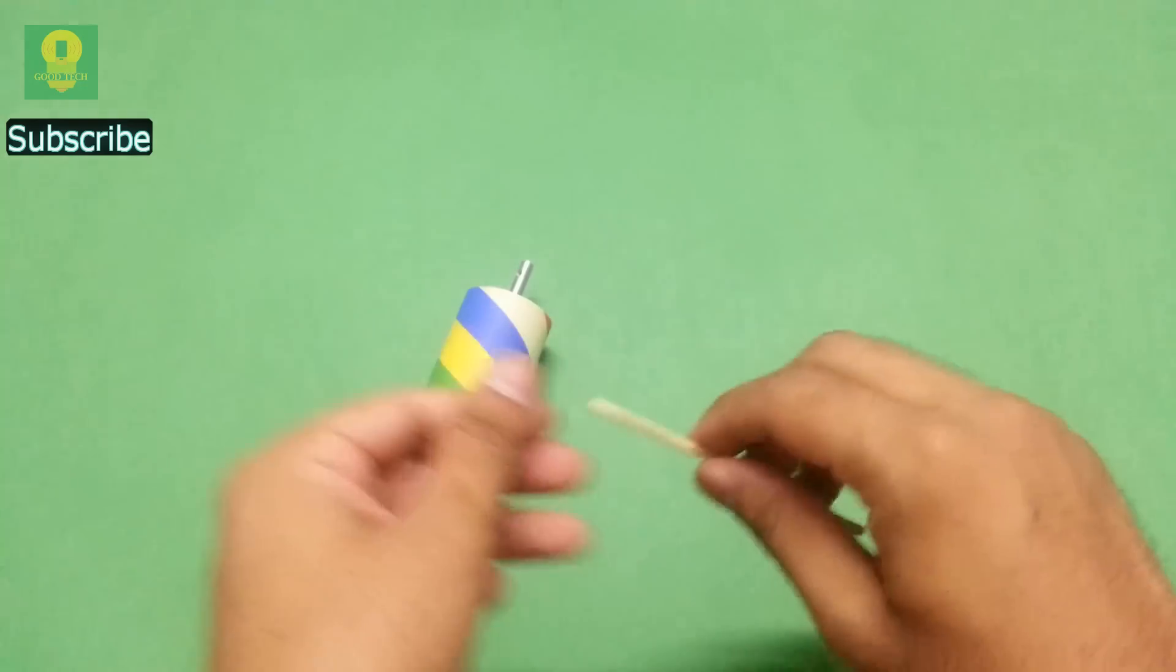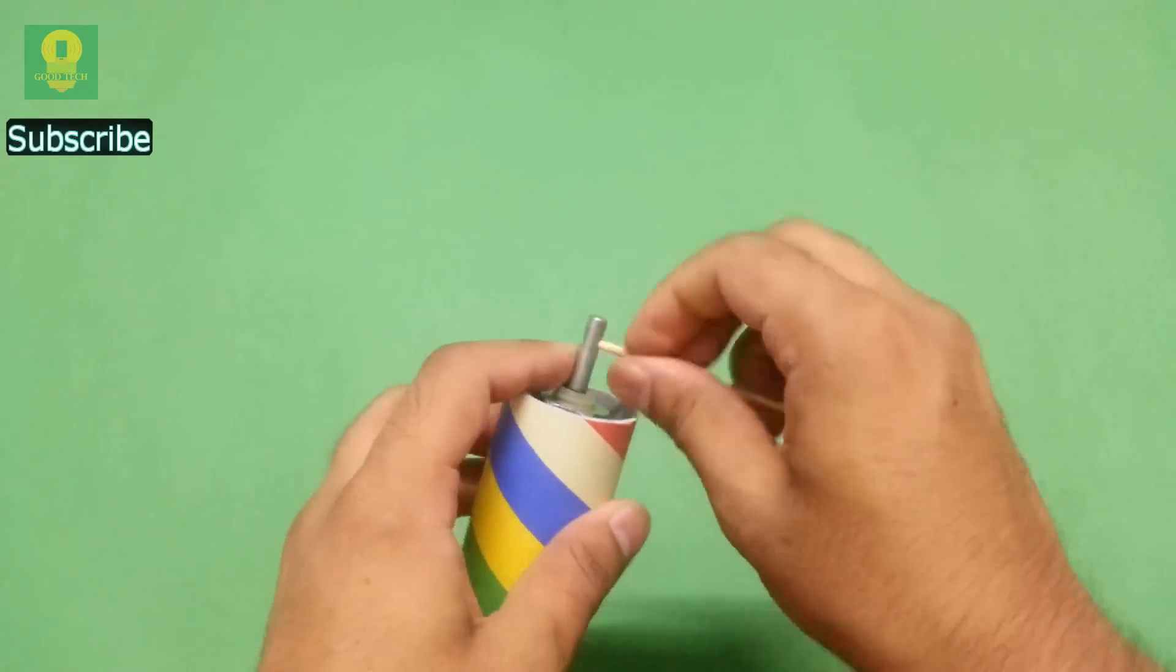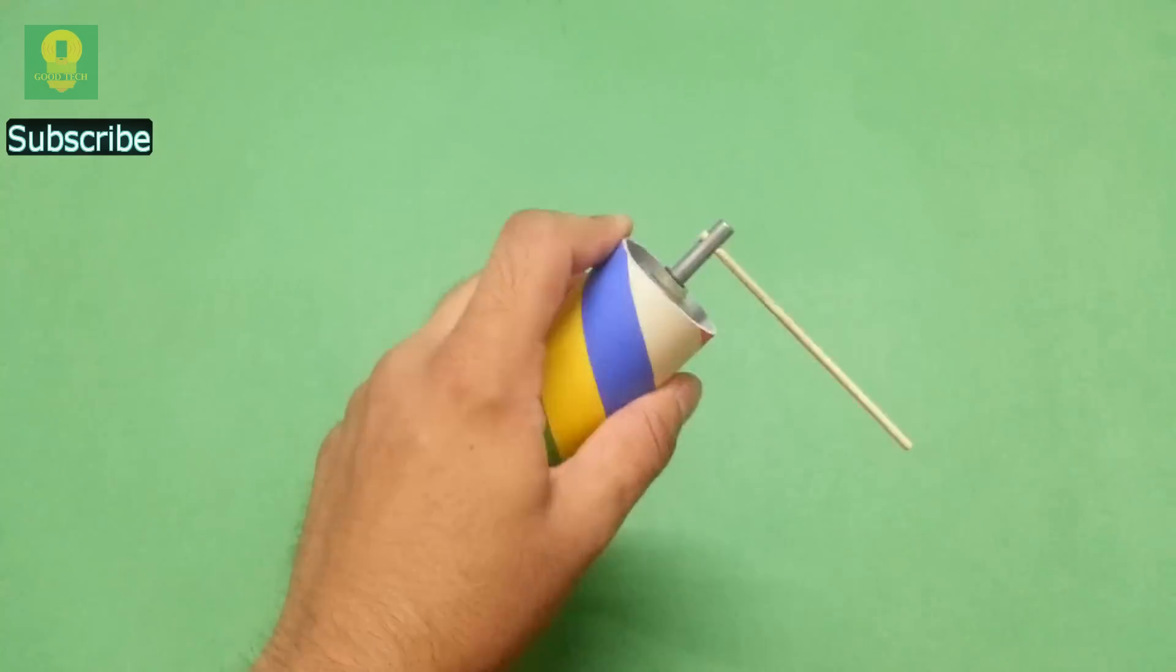then take a thin stick, insert the stick at 90 degrees to the motor shaft, and secure it with hot glue.